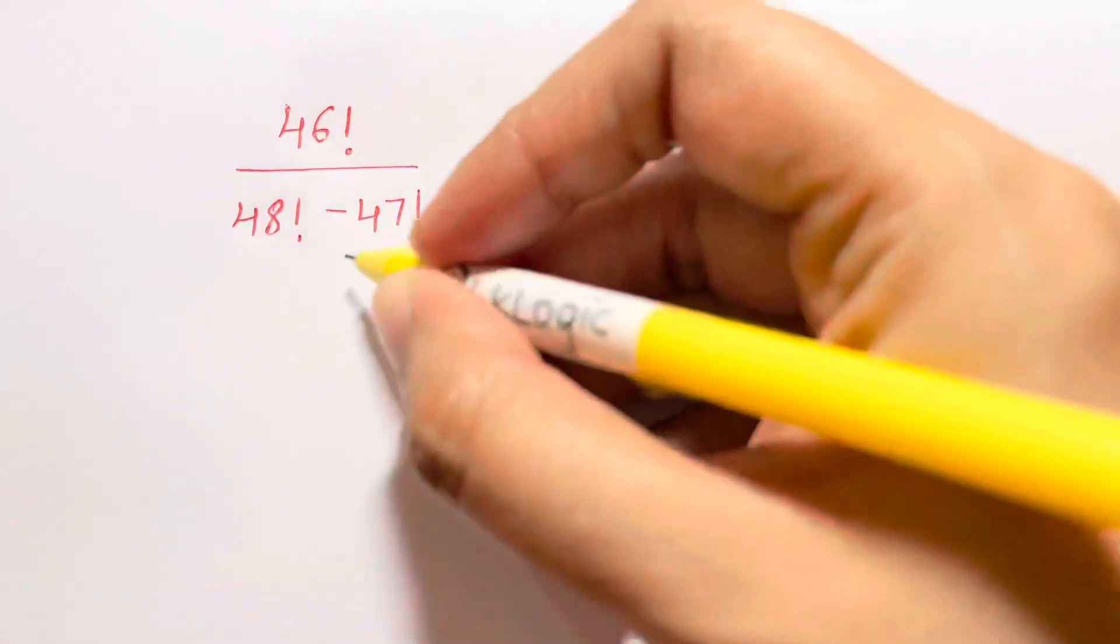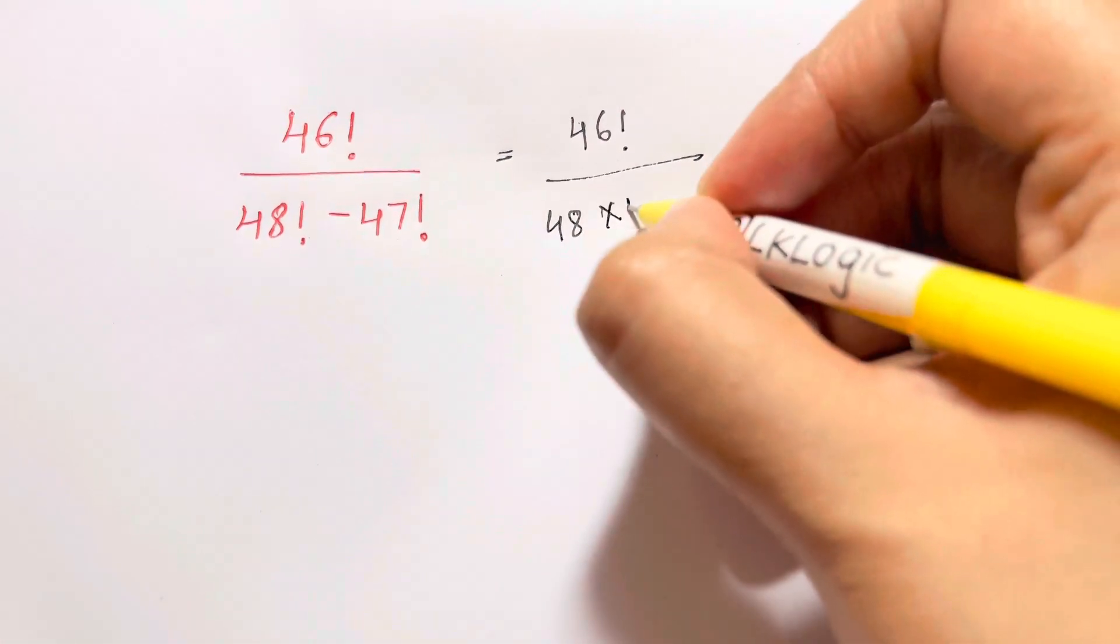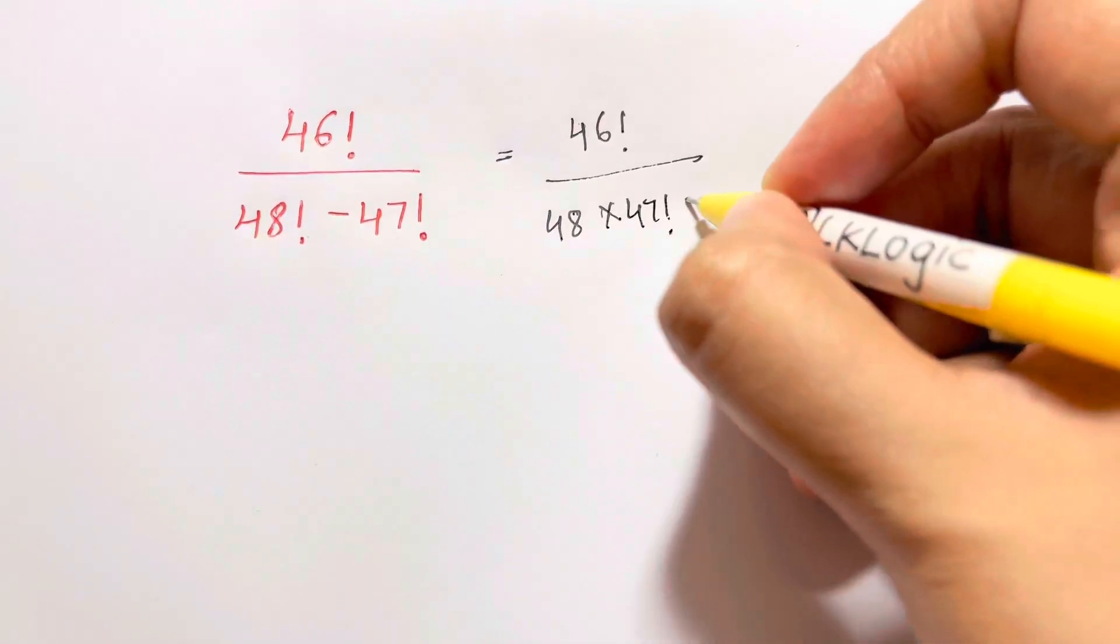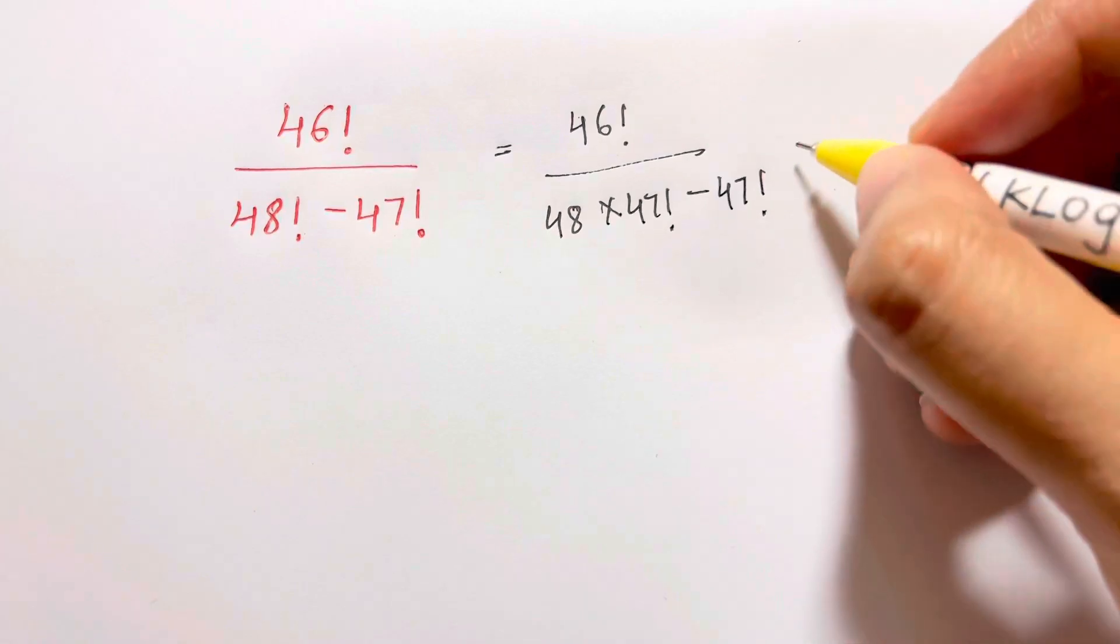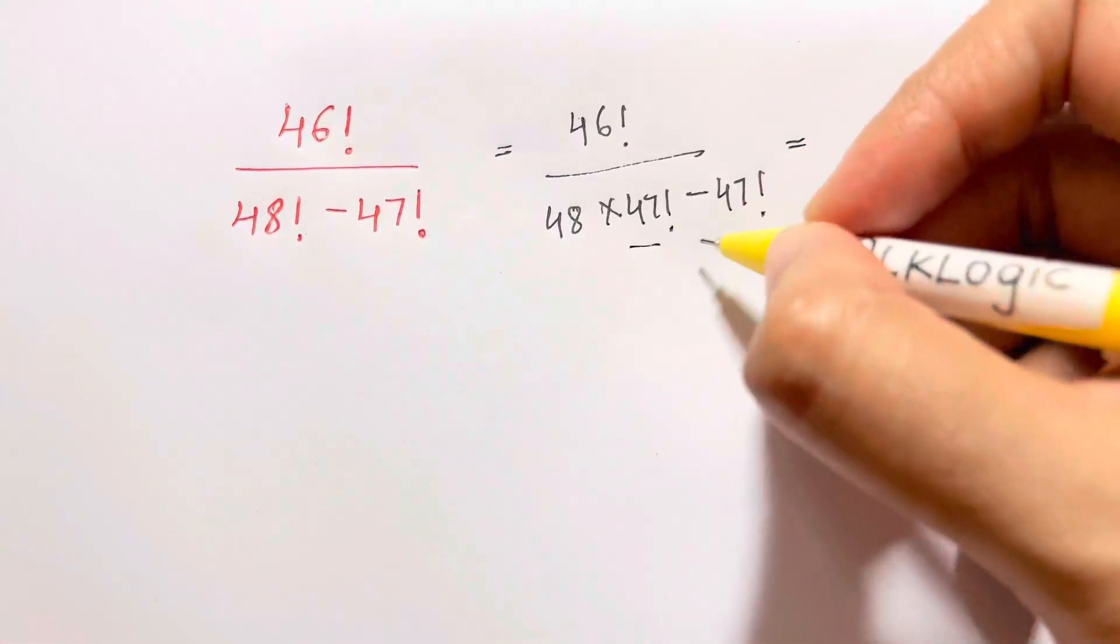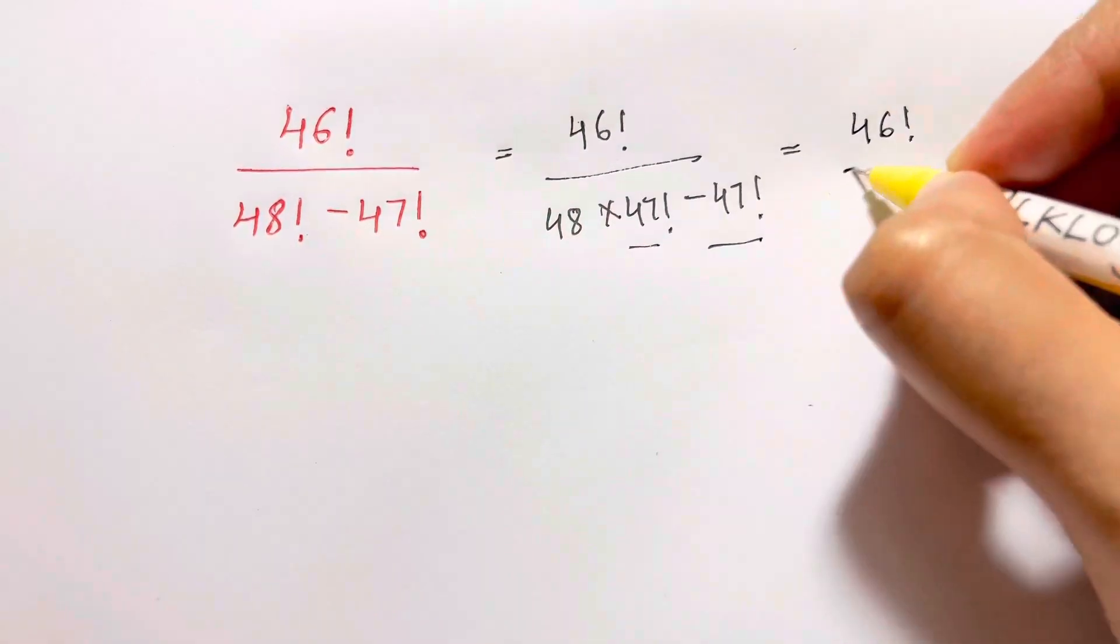48 factorial can be written as 48 times 47 factorial, and here I have minus 47 factorial. Now what happens is here I have 47, here I have 47. Take it out common. So 46 factorial over 47 factorial times I have 48, then minus 1.